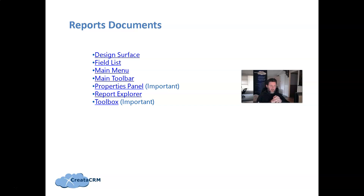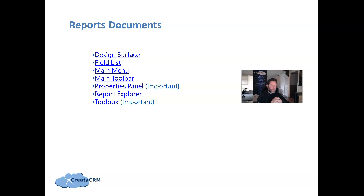The key thing with reports is we've broken it down into seven elements. There's the design surface, the field list on the right side, the main menu, the toolbox, property panels — which is extremely important to get used to — the report explorer, and the toolbox. Those are the seven elements we'll go through in this video and show you what it looks like.